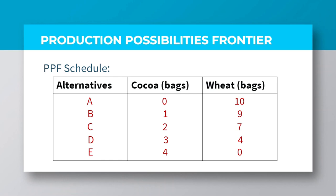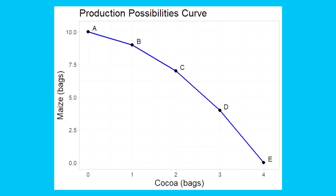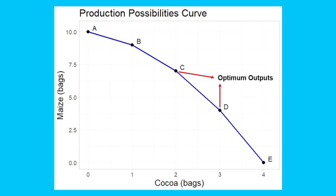Now, from this hypothetical data, a curve can be generated known as the production possibilities curve. This is the production possibilities curve for the data. You can clearly see from the diagram that the production alternatives A to E are labeled and lie on the curve. These points reflect the maximum combinations of cocoa and maize that the country can produce using its available resources and technology. So, we will refer to these points as optimum output. Any point that lies below the curve will show that the resources and technology can produce such outputs, only that the resources are underutilized. So, for example, this point is labeled as attainable, but inefficient outputs.